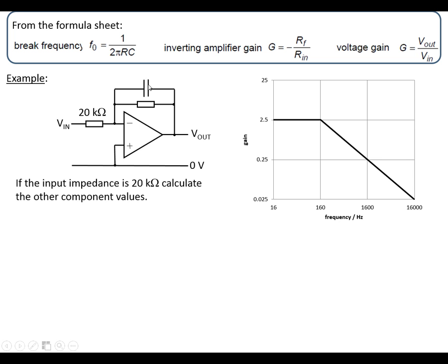First, work out the feedback resistor using gain equals RF over Rin. Rearrange to get RF equals gain times Rin. Putting the values in, we end up with 50 kΩ. So a 50 kΩ resistor and 20 kΩ resistor will give us a gain of 2.5 at low frequencies.